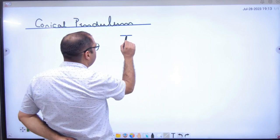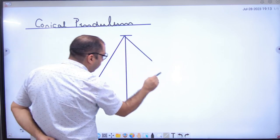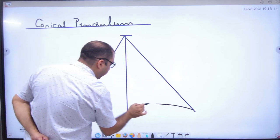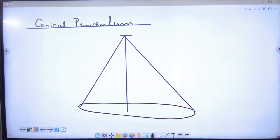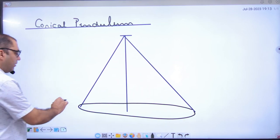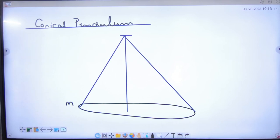The conical pendulum is when you have a string and you have thrown this stone or object in this way. The mass of the stone is M.